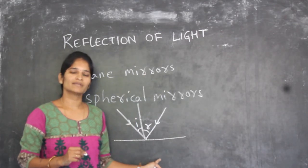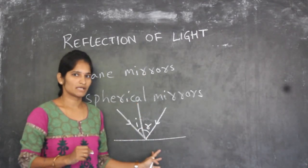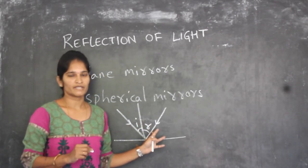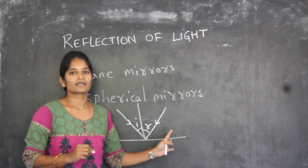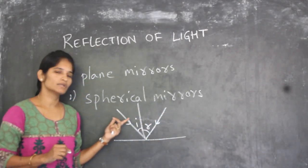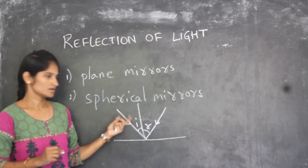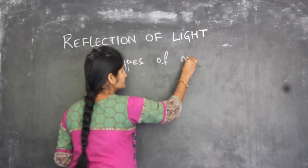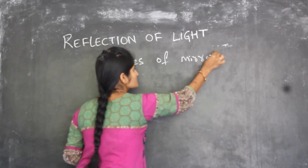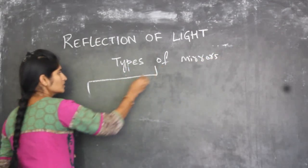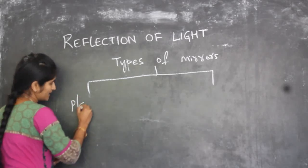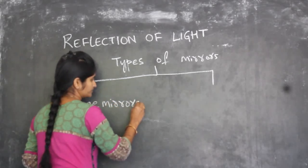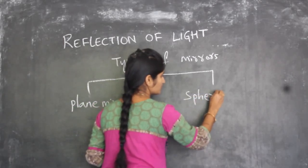So is this law applicable for spherical mirrors also? Yes, it is applicable — the first law, that is, angle of incidence will be equal to angle of reflection, is applicable for spherical mirrors. Now in types of mirrors, we have two types: one is plane mirrors and another is spherical mirrors.